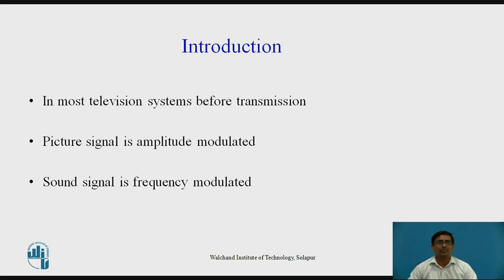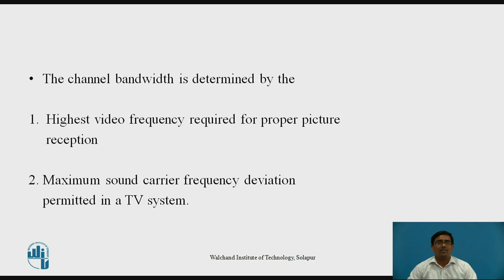In most television systems, before transmission, we require two modulation signals. One is amplitude modulation and the second is frequency modulation. Amplitude modulation is used for transmission of the picture signal, and frequency modulation is used for transmitting the sound signal. The channel bandwidth is determined by the highest video frequency required for proper picture reception and the maximum sound carrier frequency deviation permitted in a TV system.